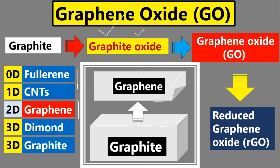Now the question arises: why do we need graphene oxide and not graphene? Let's first see the basics. What we basically do is take a graphite three-dimensional structure and oxidize it — meaning we chemically combine oxygen with graphite — so we get graphite oxide. Once we have graphite oxide, it is easy to get graphene oxide: just as from graphite we remove the top layer to get graphene (a two-dimensional material), similarly from graphite oxide we get graphene oxide.